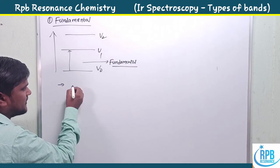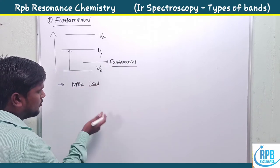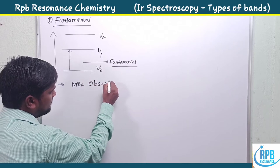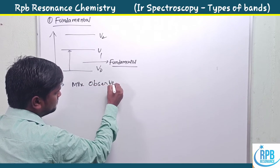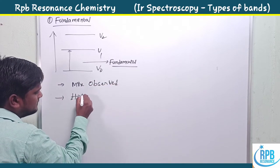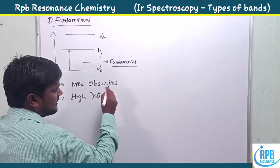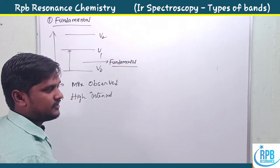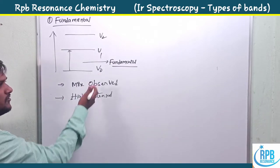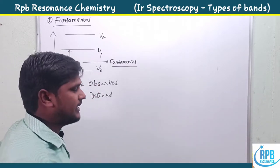In IR spectroscopy, fundamental transitions are most observed in the IR spectrum. These are high-intensity bands — more intense than all the remaining types. They are regularly observed as fundamental IR bands.